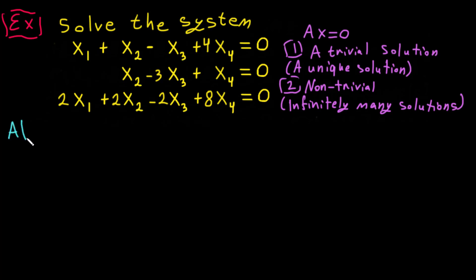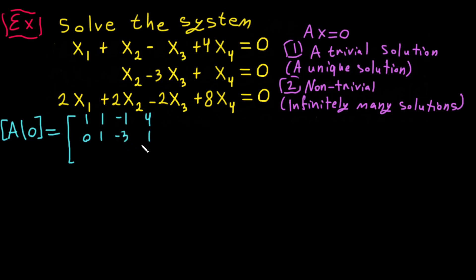Let's solve this system. I put it as an augmented matrix. We write: 1, 1, -1, 4 | 0; then 1, -3, 1 | 0; and 2, 2, -2, 8 | 0. I put the augmented line and then zeros on the right-hand side. Remember, you can solve it by subtracting equations, but the matrix method is much easier.